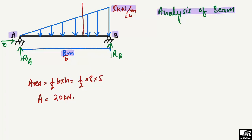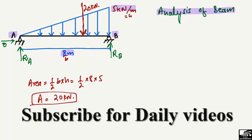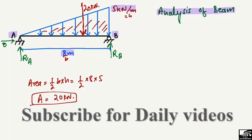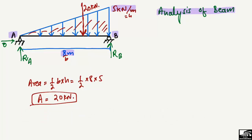This means we have a 20 kN concentrated force acting at the centroid of this load. We have now converted the uniformly varying load into an equivalent point load of 20 kN. Next, we need to find the distance x from point A to where this point load acts, because we will need this distance for the moment calculation.